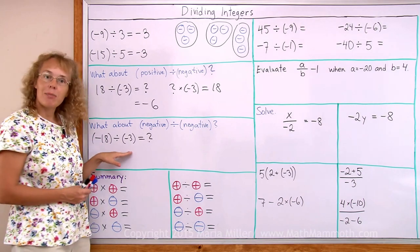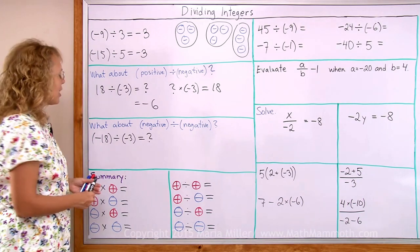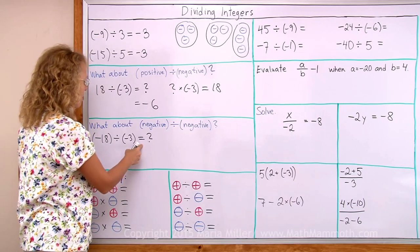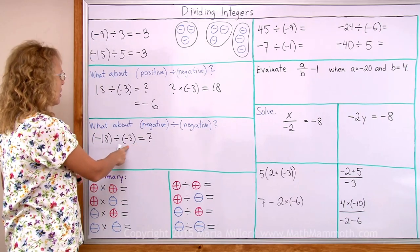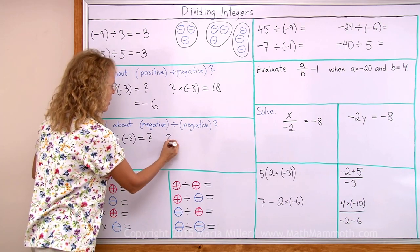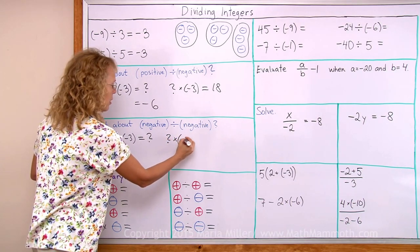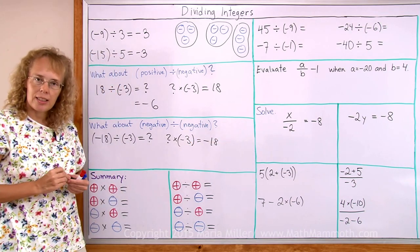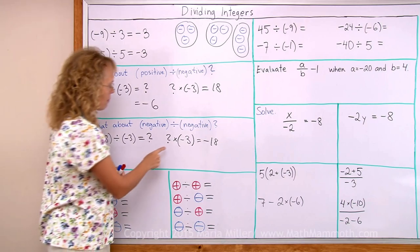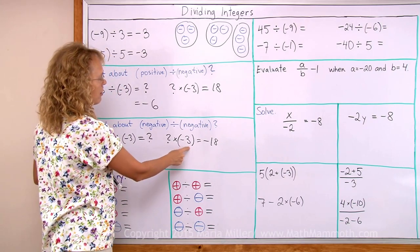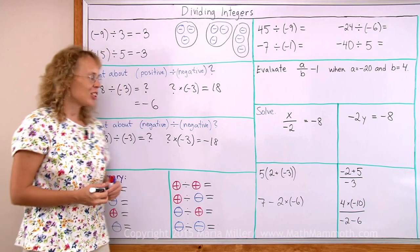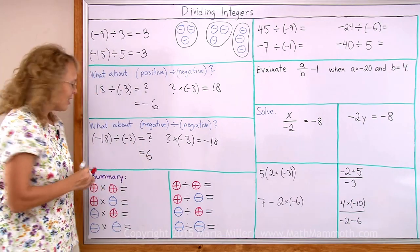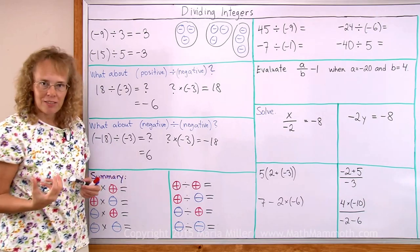Now what about negative divided by negative? We'll use the same idea — whatever the answer is, we use multiplication. This number multiplied by negative 3 has to equal negative 18. Let's try if 6 or negative 6 works. 6 times negative 3 — yes, it does equal negative 18. So the answer is 6; we get a positive answer. Negative divided by negative gives us a positive answer.